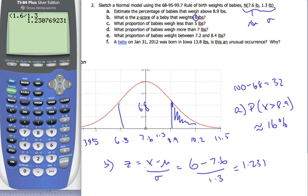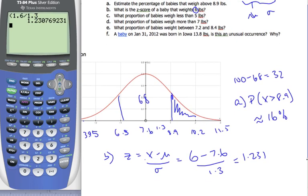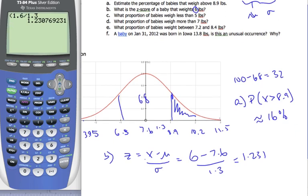Looking now at c part, it says, what proportion of the babies weigh less than 5 pounds? Well, as you know, I'm a big believer in drawing sketches. So, 5 pounds, I know, is roughly here. Well, not roughly, it is here. I'm going to find that value here. I can get a pretty good estimate just upon the symmetry. 2 standard deviations away.